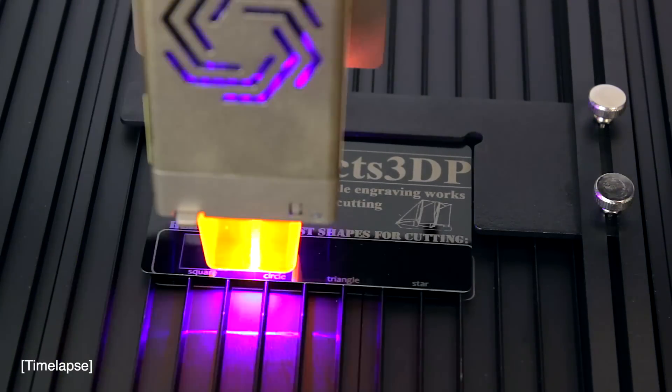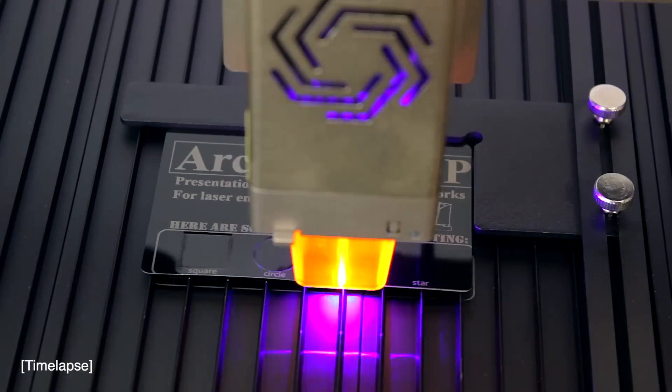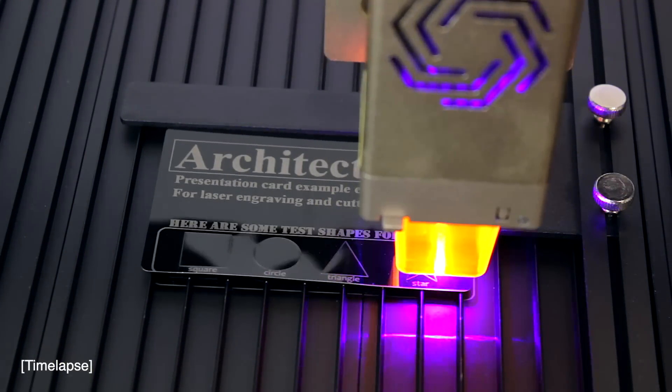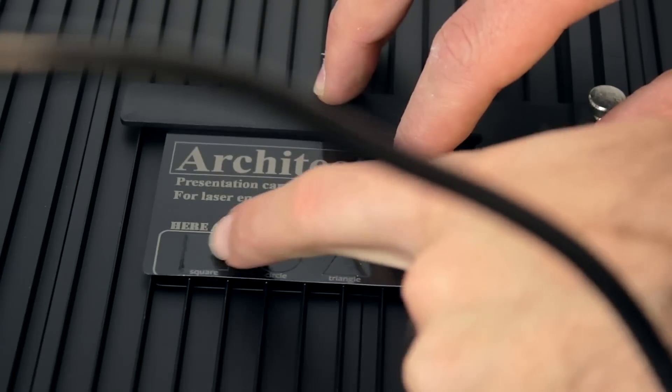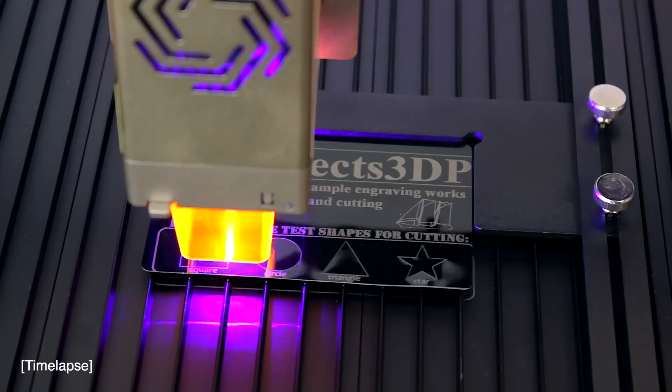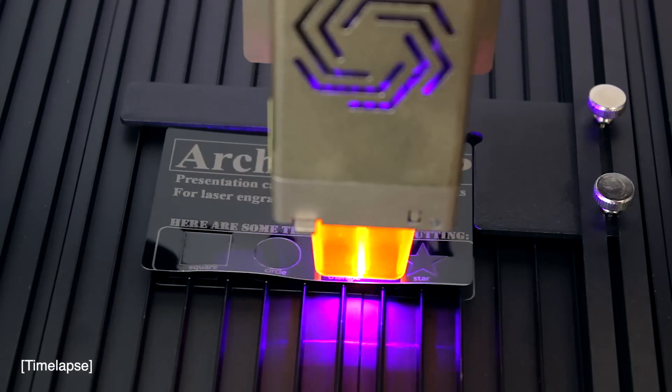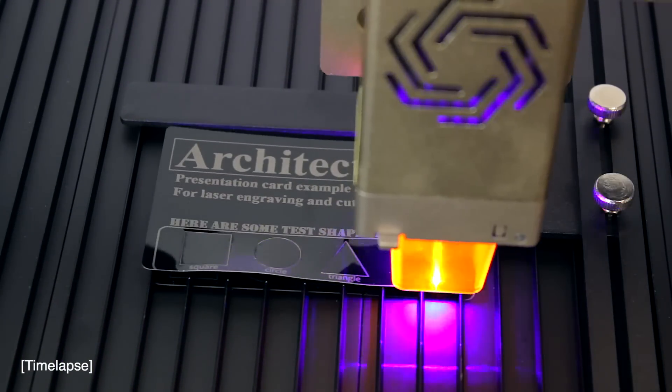I know that trying to cut metal with this machine is not a good idea, but that's what I'm going to do and see what happens. After framing the work, here we go with the cut. As you can see, the whole card is bending due to the temperature, but as I was expecting, the laser did not cut through. After a second attempt, the card kept bending more and more, but the laser diode never got through the metal.